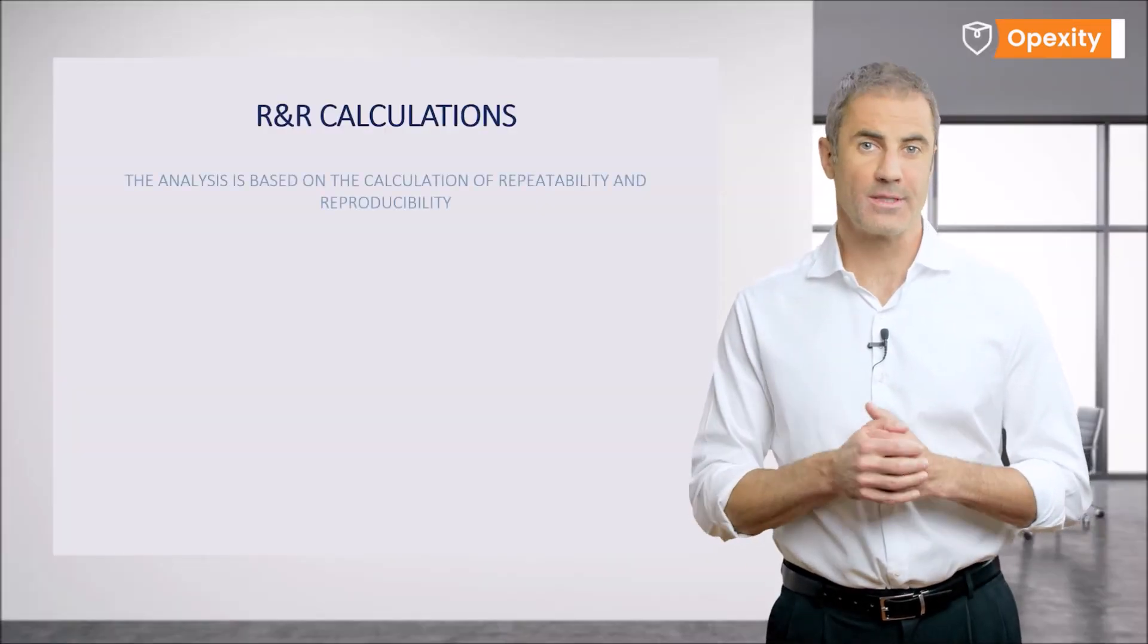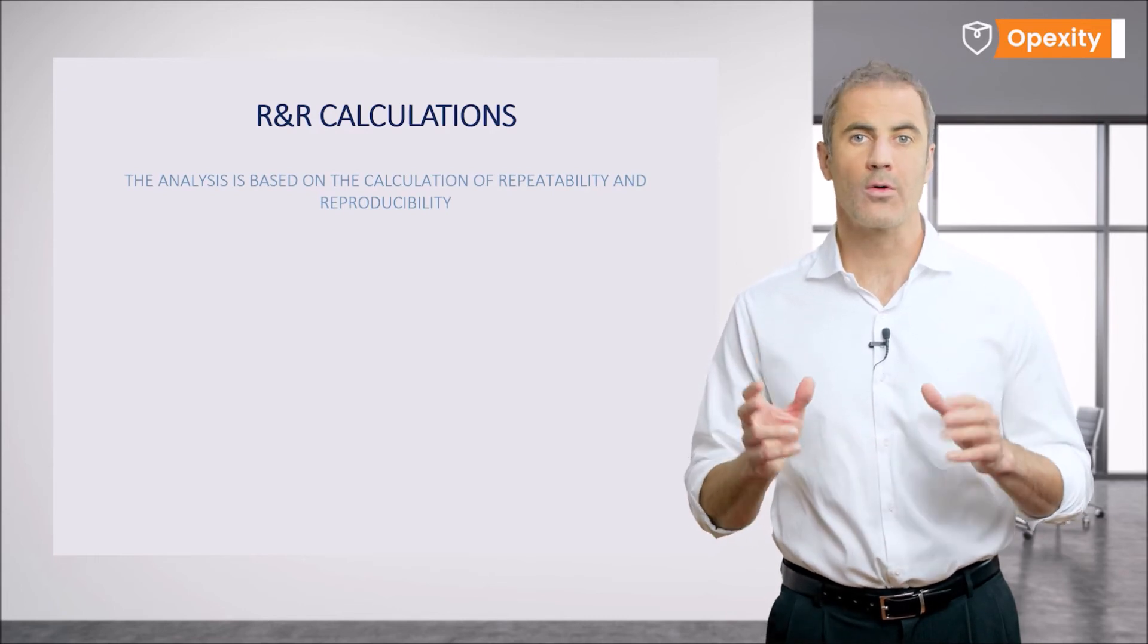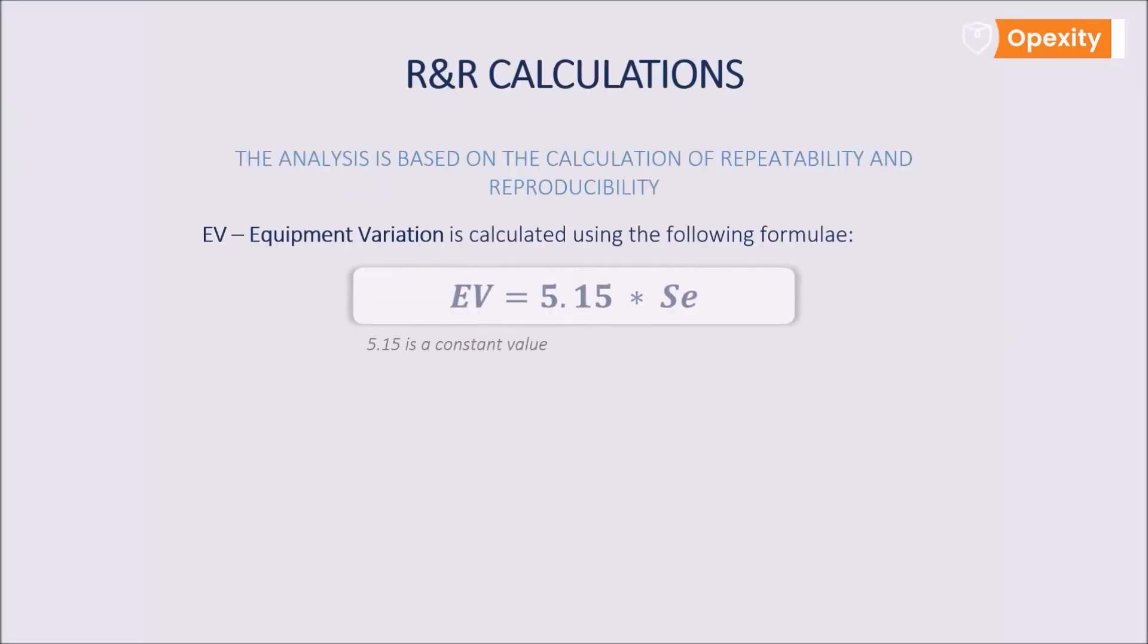Finally, we can calculate the repeatability, the so-called equipment variation EV. Here we apply the standard formula by multiplying the value of the previously calculated standard deviation SE by the constant 5.15, where 5.15 times SE represents 99% of the measurement results for a normal distribution.